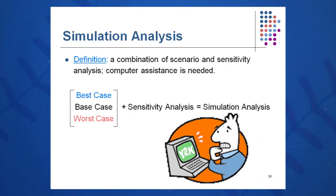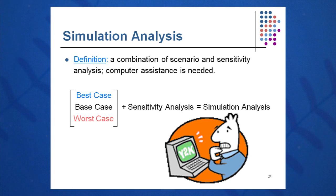The third type of what-if analysis is simulation analysis, which is a combination of scenario and sensitivity analysis. We take the best case, worst case, and base case and do a sensitivity analysis in combination with that — in essence, varying everything.